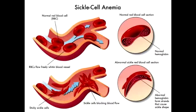Describe the appearance of sickle cells. Sickled red blood cells have a crescent shape, similar to the crescent moon shape. Describe the appearance of the skull x-ray in sickle cell anemia. You would see the classic crew cut on skull x-ray due to marrow expansion.